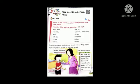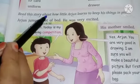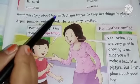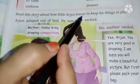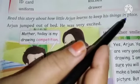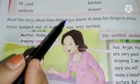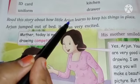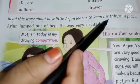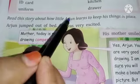Arjun. अपनी चीज़ें अपनी जगें पर रखो. Let's begin. Read this story about how little Arjun learns to keep his things in place. यह story पढ़ते हैं जो एक छोटे बच्चे अर्जुन के बारे में हैं, जो अपनी चीज़ें अपनी जगें पर कैसे रखते हैं, यह बात सीखता है.